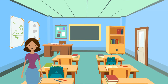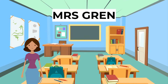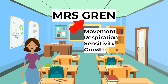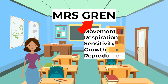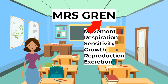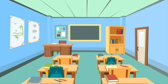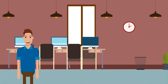An easy way to remember all the characteristics is MRS GREN. We need to be able to describe the characteristics of living organisms by defining each of the terms.